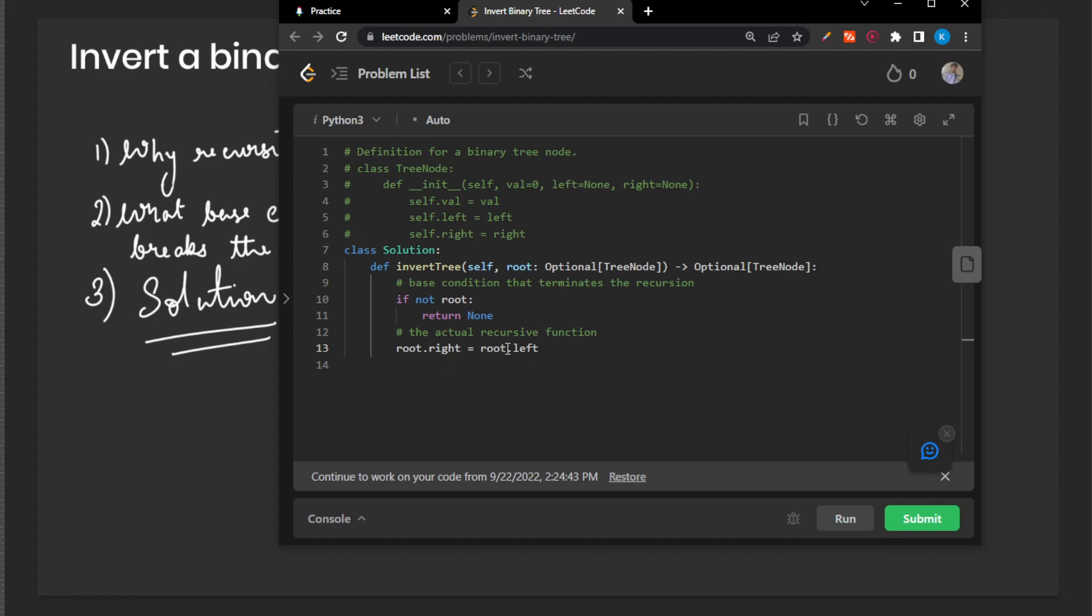How are we going to do root.left equals to root.right? Because root.right already equals root.left. We would just be doing root.left equals to root.left, which doesn't make any sense.